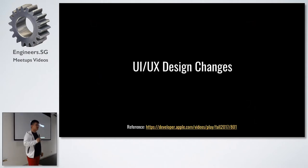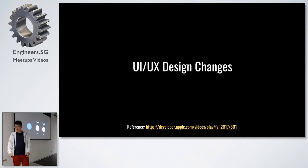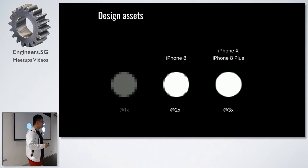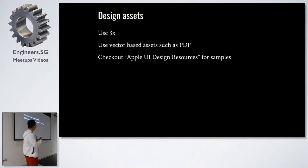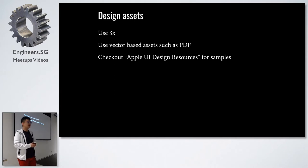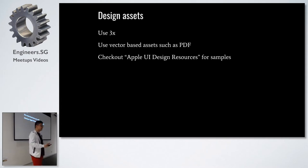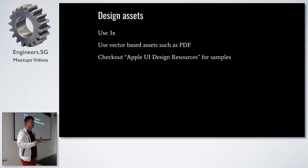Let's take a look at some key design changes. First, design assets: all design assets on iPhone X use 3x designs, so if you've been using 3x you don't need to do anything special. Moving forward, Apple suggests using vector-based assets — for example, PDF — so that if Apple introduces devices with 4x or 5x in the future, you don't need to do anything special. Apple also provided example assets for download and exploration.